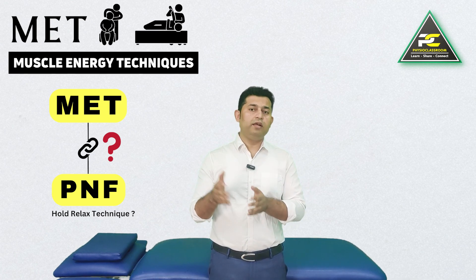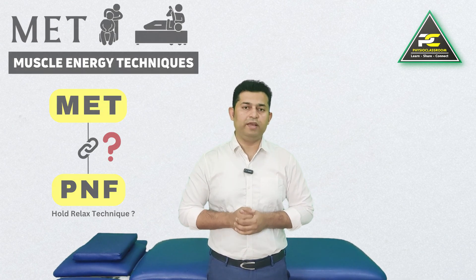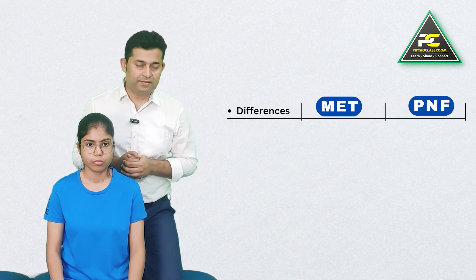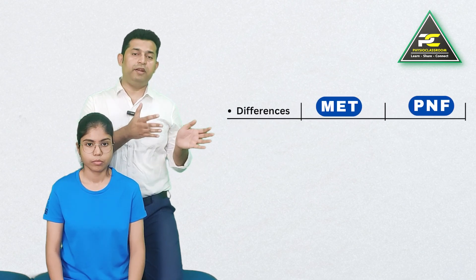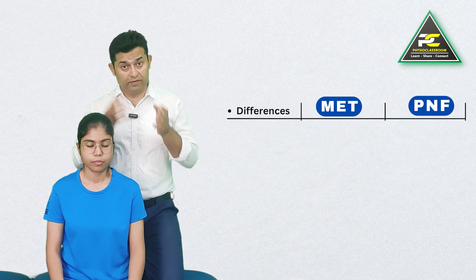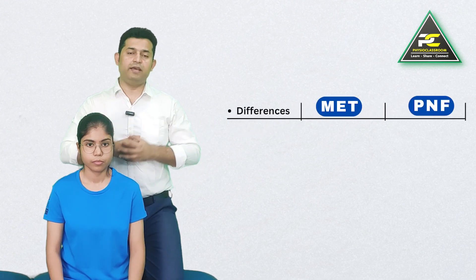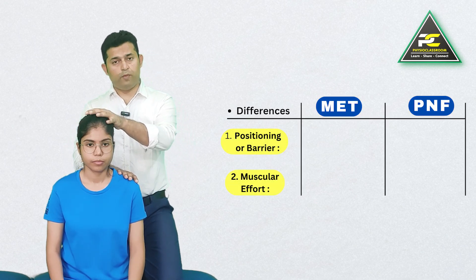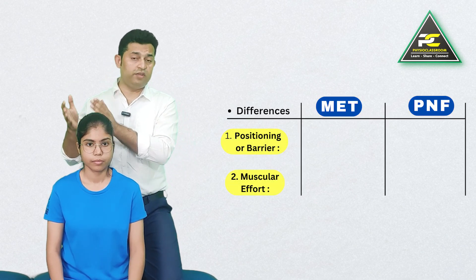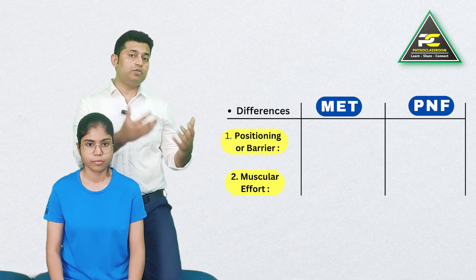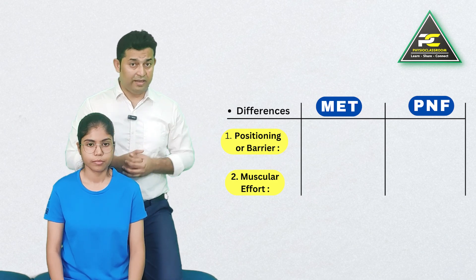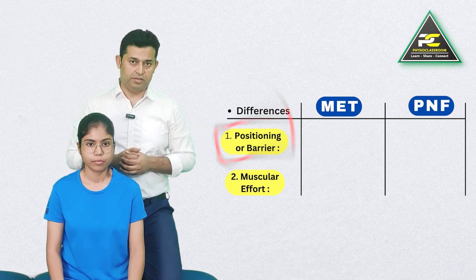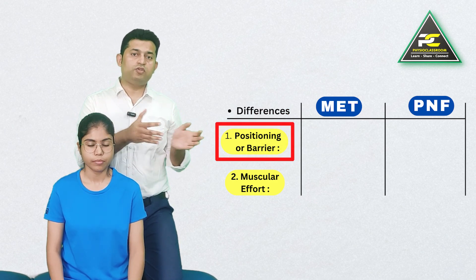The two most important differences between MET and PNF hold-relax are: the positioning of the body part — that is, the choosing of the barrier — and the muscular effort demanded from the patient. Let's talk about the barrier first.